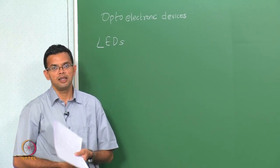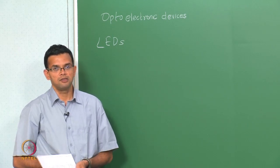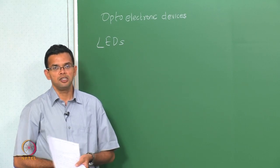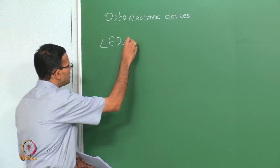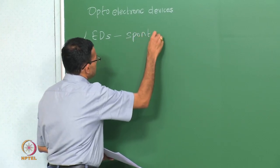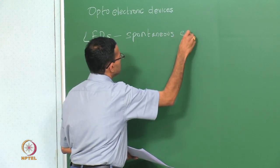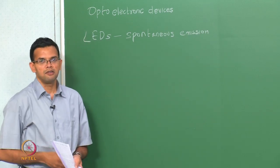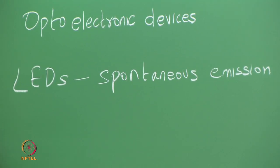If you have a material like gallium arsenide then the light output is produced in the IR region. If you want light in the visible region you choose a material with the corresponding band gap. LEDs are an example of spontaneous emission, which means typically the radiation is emitted in any direction and is not necessarily in phase.